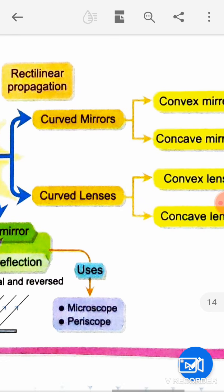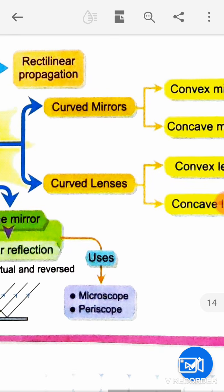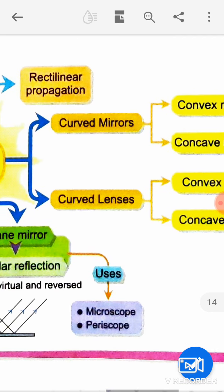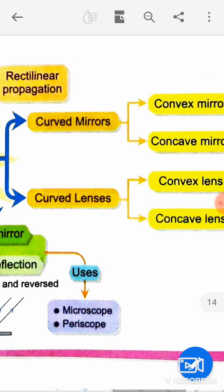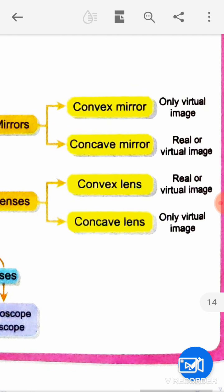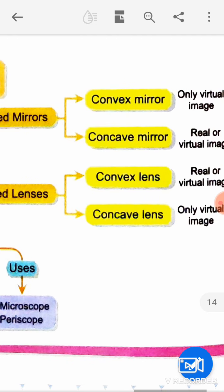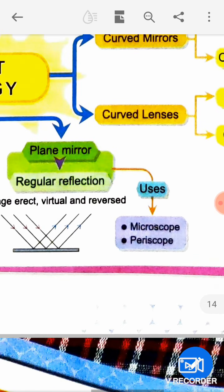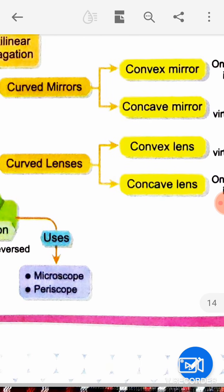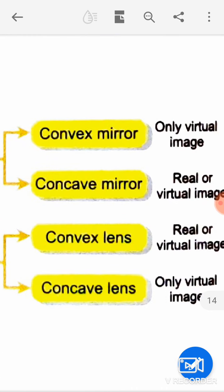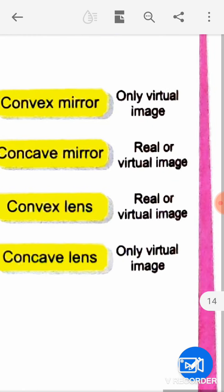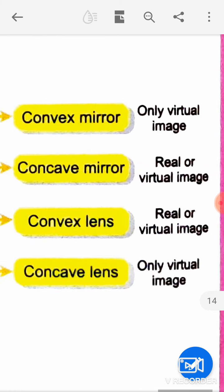Now here you will see mirrors. There are curved mirrors: convex mirror, concave mirror, and plane mirror. A convex mirror forms only a virtual image — an image that cannot be captured on a screen.